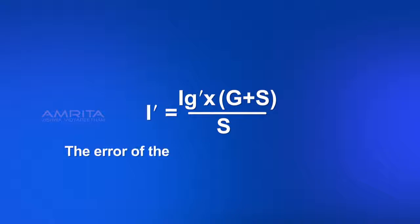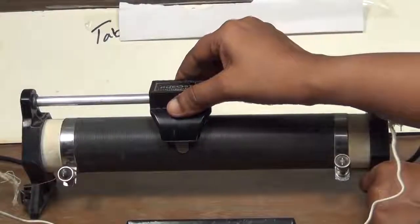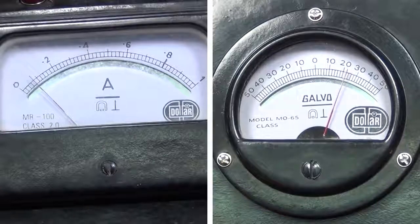The error of the converted ammeter is calculated as I minus I'. Repeat the experiment by changing the rheostat resistance.